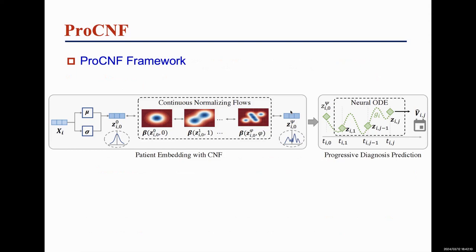Specifically, we first leverage CNF to transform a patient from a simple base distribution, such as Gaussian, into a more complex patient-specific distribution. This transformation is done via a series of invertible mappings when the base distribution is reparameterizable. Furthermore, based on the complex patient distribution, we propose a CNF-enhanced neural ODEs module for diagnosis prediction. For details of the model design, please refer to our paper.